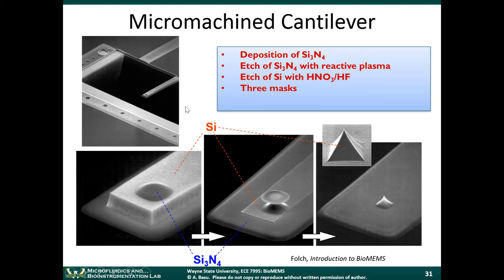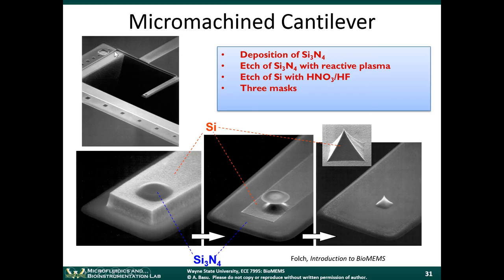When microfabricating a cantilever for AFM, we want the cantilever beam to have a certain spring constant — a certain flexibility — and we need the tip to be extremely sharp, since that determines the resolution of the technique. You can use micromachining techniques to make an atomic force cantilever beam. The way you do this is first deposit silicon nitride, then etch the silicon nitride with a reactive plasma, starting with a silicon wafer. You define a certain region of silicon nitride and remove it in other areas using plasma etching.